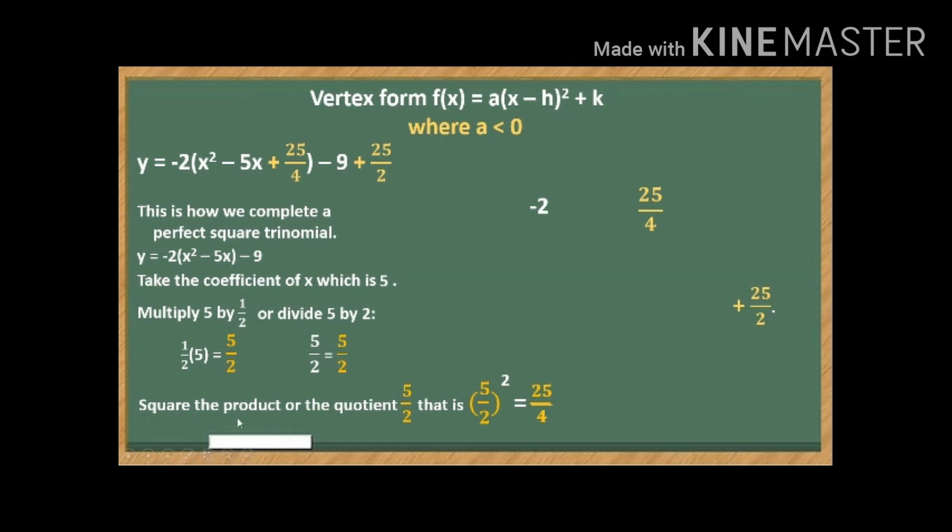So after this, we square the product or the quotient 5 over 2. That is, the square of 5 over 2, it becomes 25 over 4. And that is what we are going to copy. So we have here plus 25 over 4.